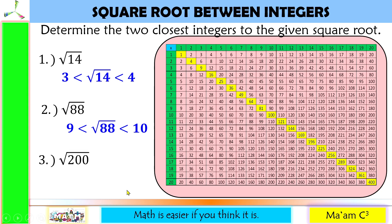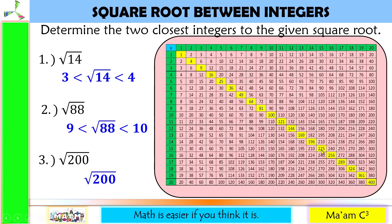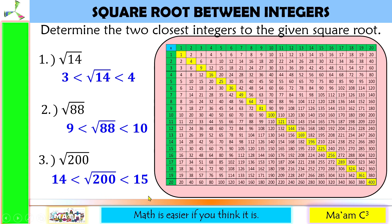Last example: the square root of 200 is less than the square root of 225, which is 15, but greater than the square root of 196, which is 14. So the square root of 200 is somewhere between 14 and 15.